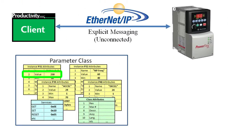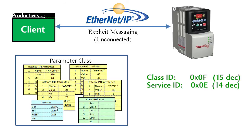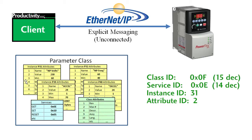Suppose we want to get the value of parameter 31. We look up the manual and find that the parameter class is number 15 (0x0F hex), the get service code is 0x0E, the instance of this object we want is number 31, and the attribute we want is number 2 — the value. We simply hand those numbers to the explicit message instruction and it fetches the value of that parameter for us.